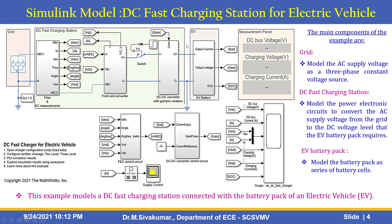The third important subsystem is the EV battery pack, which models the battery pack as a series of battery cells. The measurement panels show DC bus voltage, charging voltage, and charging current. The scope displays DC bus voltage, DC bus current, charging voltage, and charging current. There is also a FEC control circuit where you can configure the rectifier as average, two-level, or three-level.